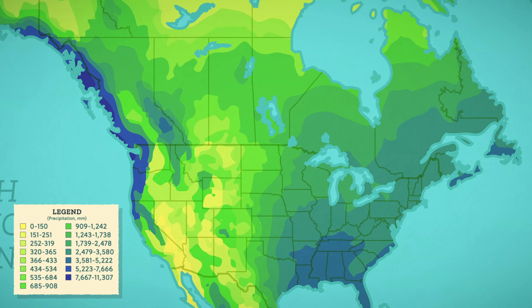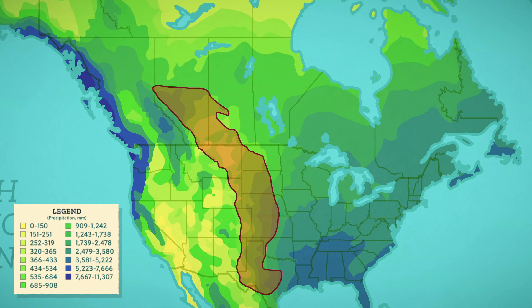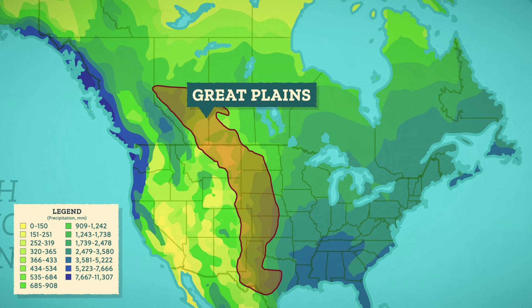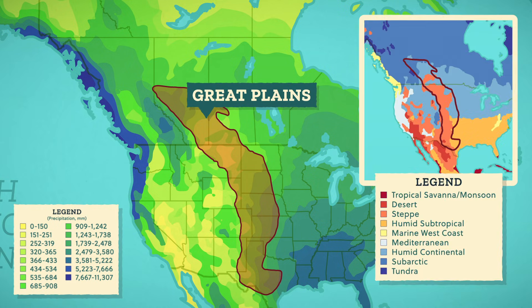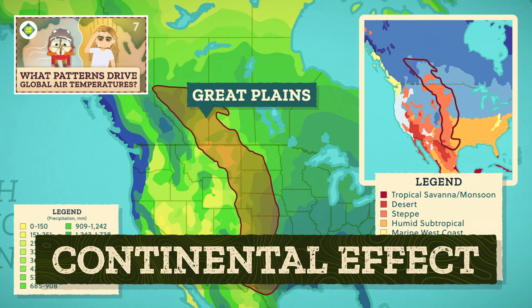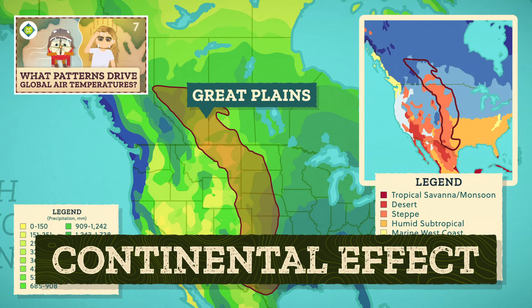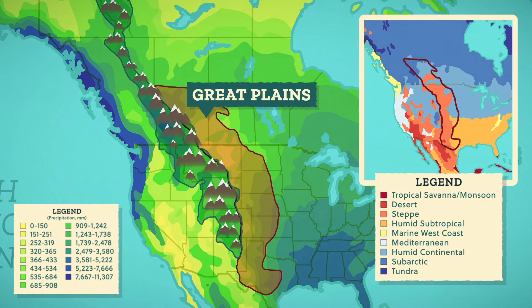A different kind of precipitation variability can happen within a place that spans similar latitudes. Like there's a region that makes up a large chunk of the continental interior of the US and Canada, often called the Great Plains or the Prairies. Because the Great Plains sit deep within the interior, far from oceans, a phenomenon called the Continental Effect causes huge temperature fluctuations with scorching summers and frigid winters.